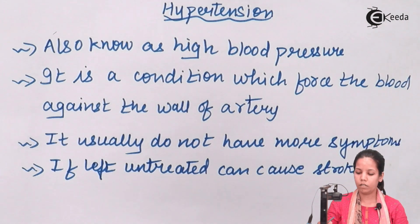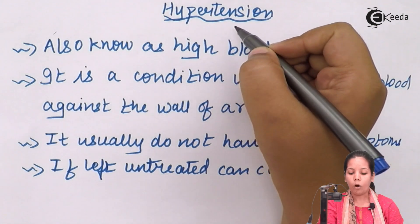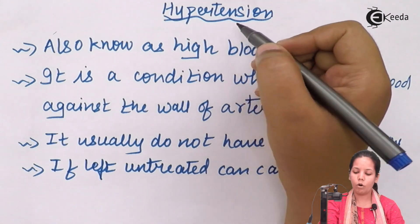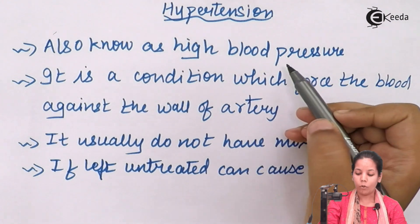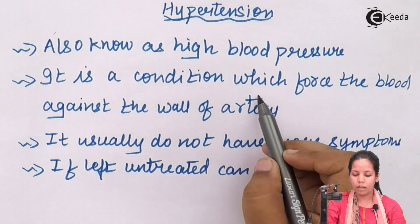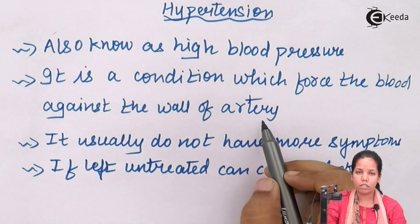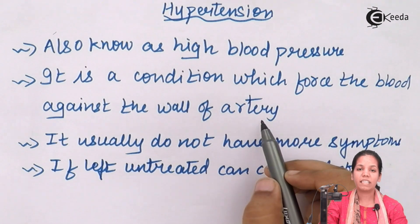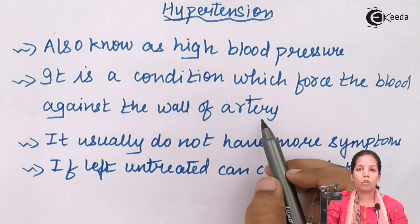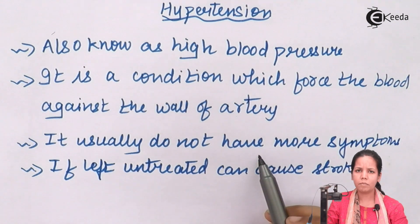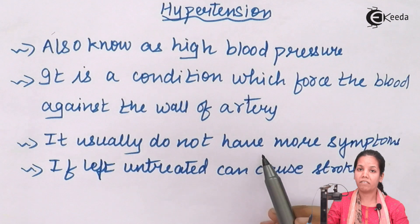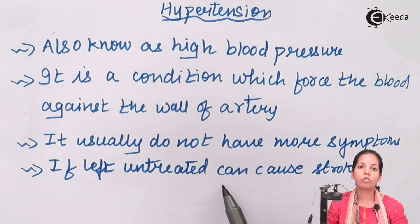Hypertension is a condition which forces the blood against the wall of arteries. Once that happens, it leads to detrimental conditions such as fatigue, dizziness, and loss of consciousness. It usually does not have many symptoms — the symptoms are very limited — but if left untreated, it can cause stroke, or simply myocardial infarction.